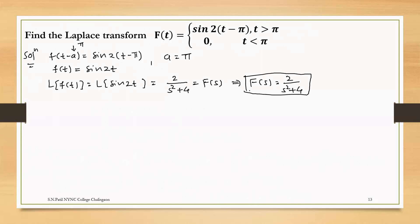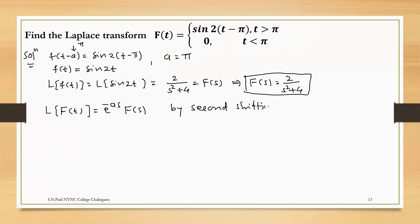So capital F(s) equals 2 over (s squared plus 4). Now we have both capital F(s) and a. By the second shifting property, the Laplace transform of the given problem capital F(t) equals e raised to minus a·s into F(s). The value of a is π, so it is e raised to minus π·s into 2 over (s squared plus 4). This is the required answer.